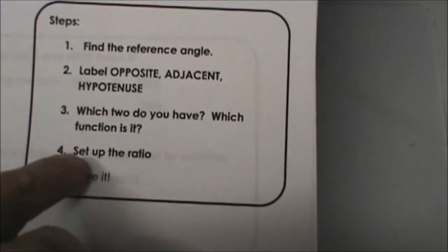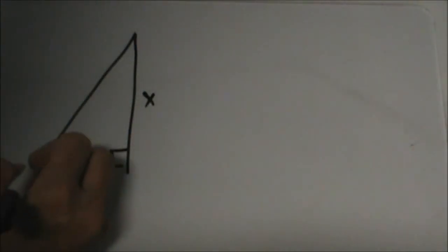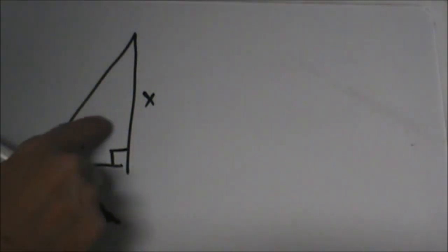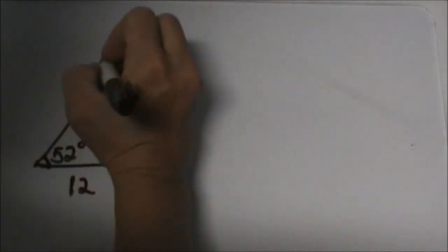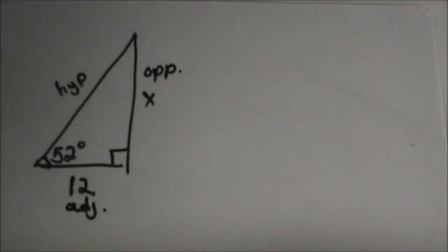Then on the second page we are going to go through actually solving those. Let's look at this setup. We want to use this 52 degree angle as our reference angle. From this 52 degree angle, this side is the opposite, this side is the hypotenuse, so that means the side that is labeled 12 is my adjacent side.